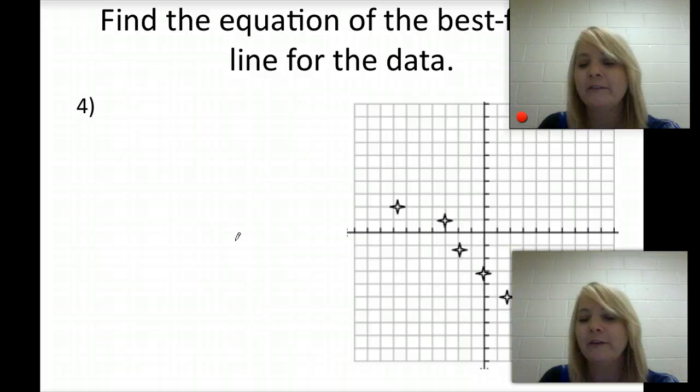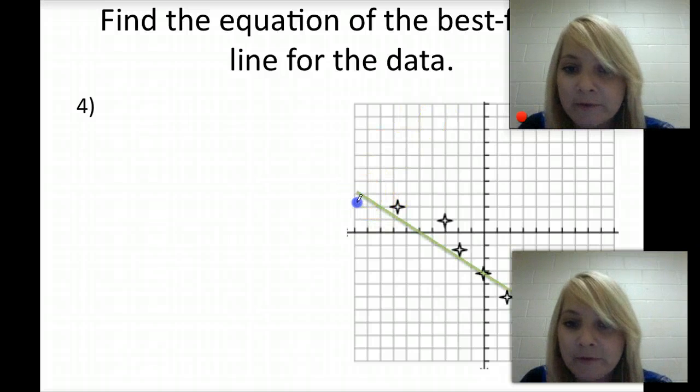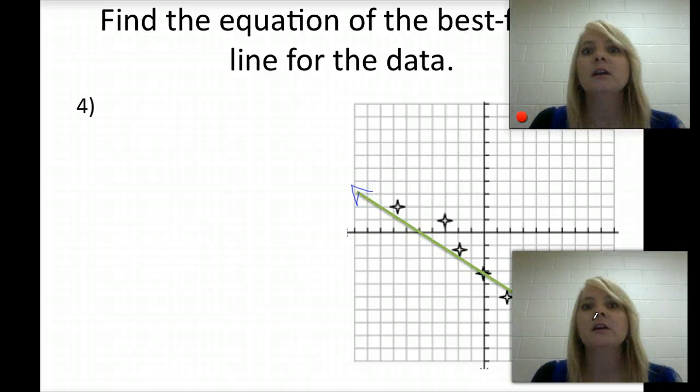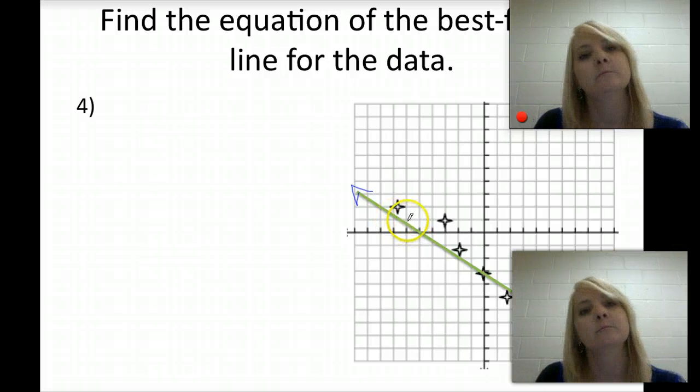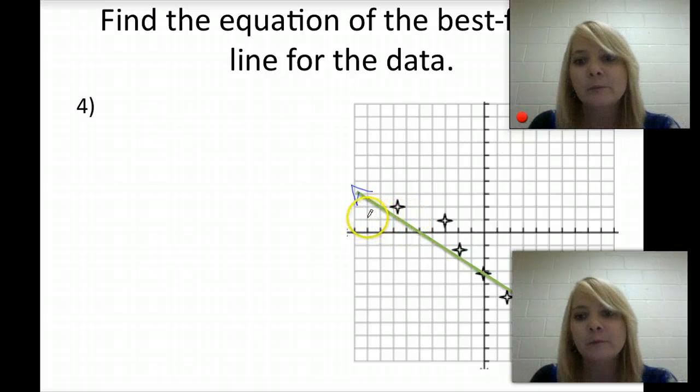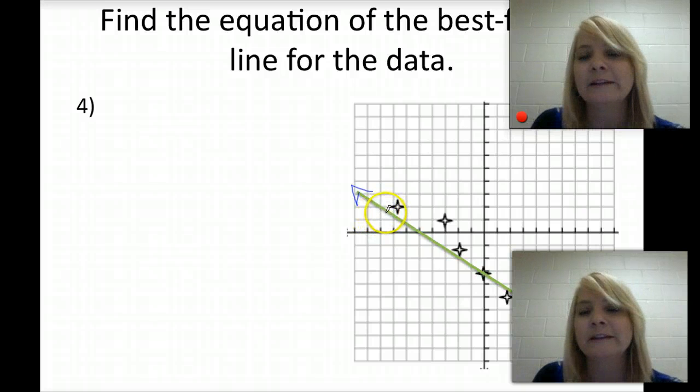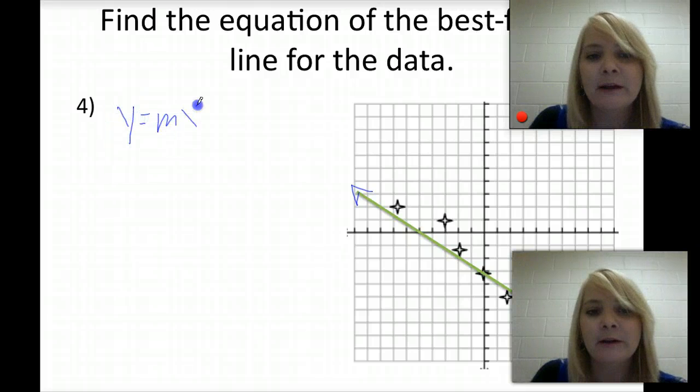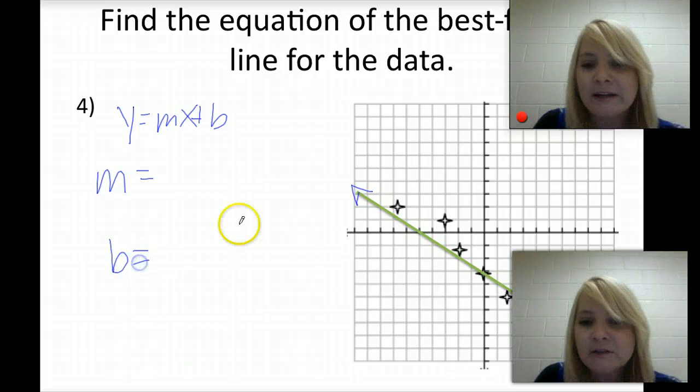The next equation for the best-fitting line. Once again, we have another negative slope. So connect it with the line that best represents. And when you're doing lines that best fit, you may not have the exact same equation as someone else. But that's okay. Because we all have slightly different interpretations of what that line looks like. But they'll be similar. Once again, y equals mx plus b. We need to find the slope, we need to find our y-intercept.